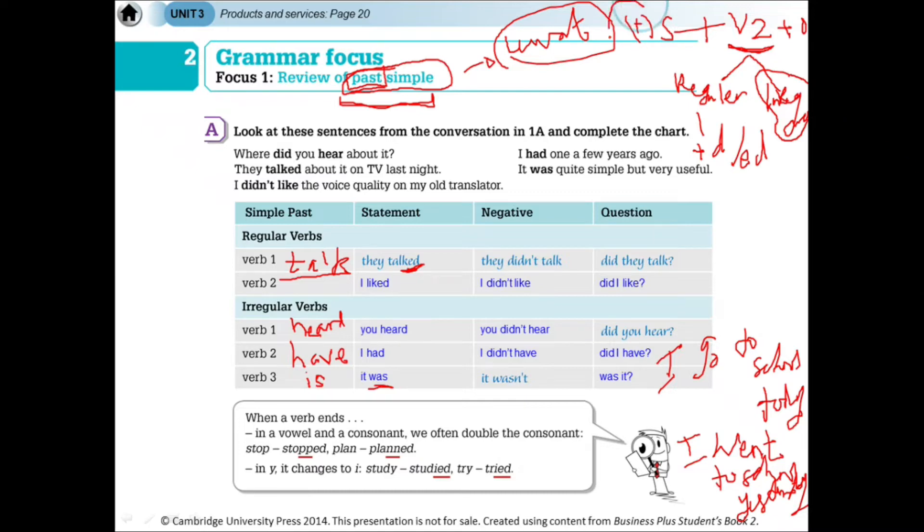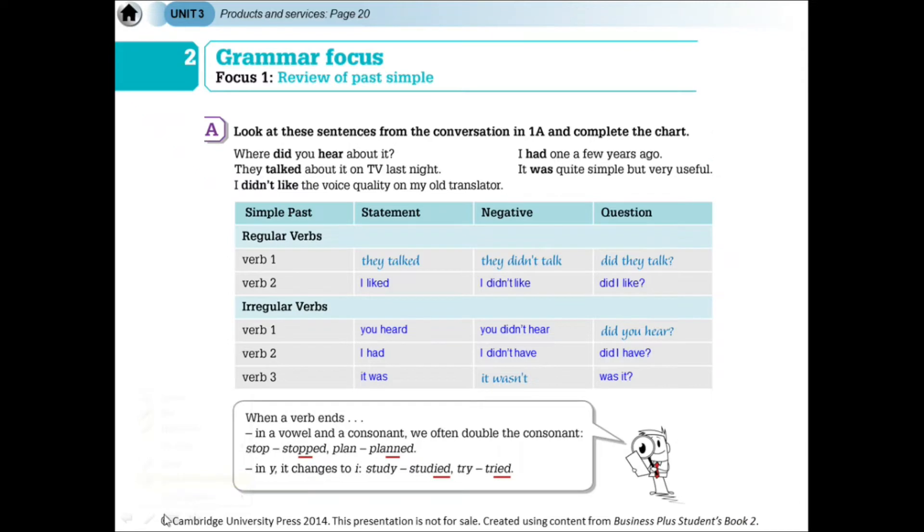That's for positive sentences. Remember that it's subject, verb 2, and then you write the object. Let me write here again. Subject plus the verb - verb 2 - then use the object. Verb 2 includes regular verbs, which just add D or ED, and irregular verbs. For irregular verbs, you must check in the dictionary.